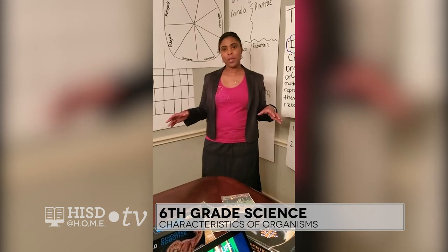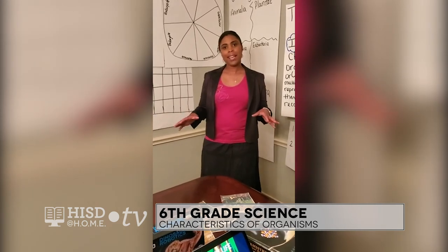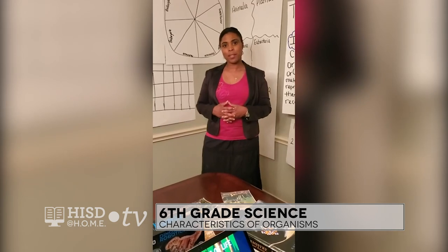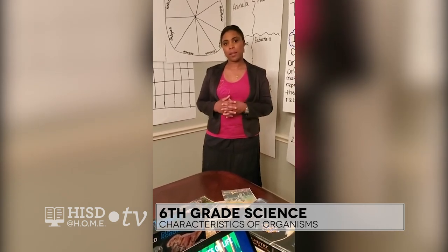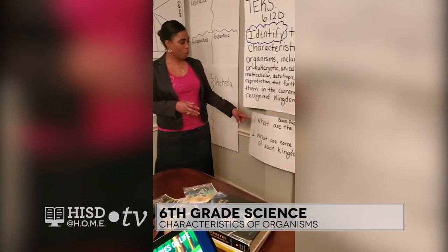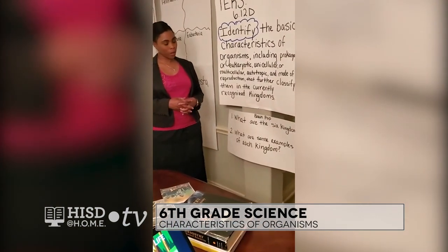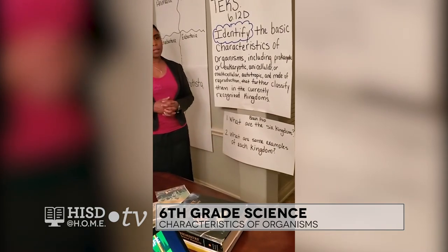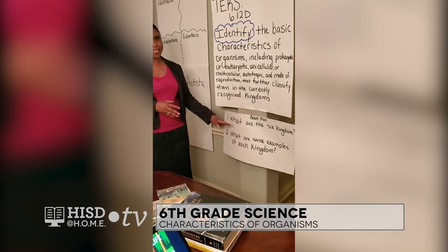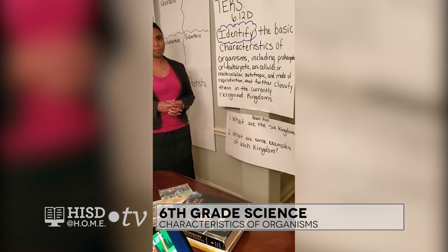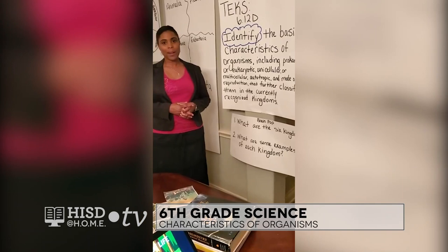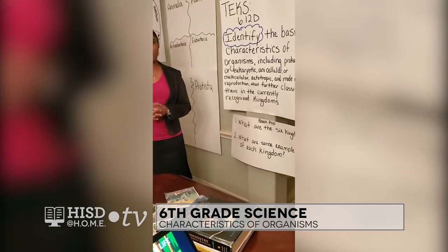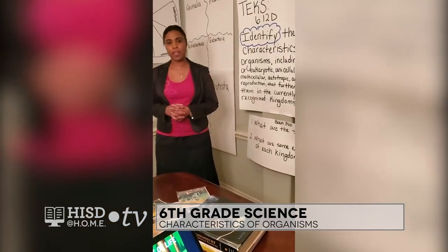But first we're going to watch a video. So I want you to take out those science interactive notebooks and you're going to jot down two questions, because these two questions you're going to answer while watching the video. The first question: what are the six kingdoms? The second question is: what are some examples of each kingdom? I'm going to give you two seconds to write that down. Now we're going to watch our video — remember our questions when you're watching.